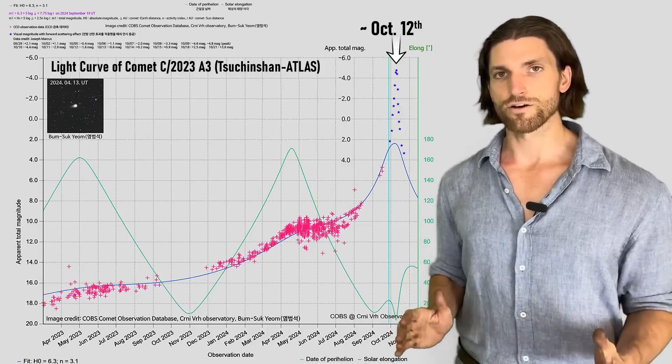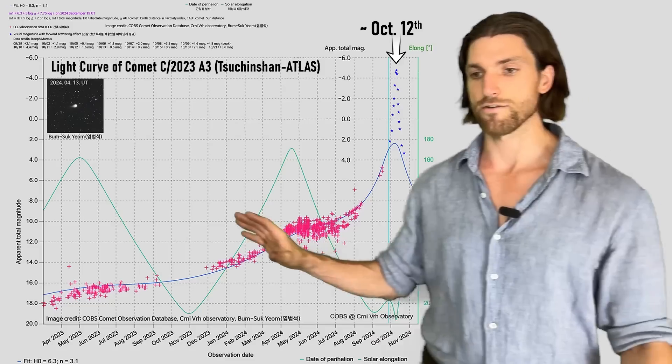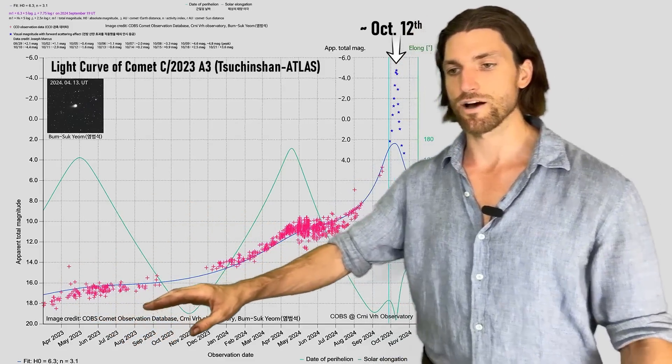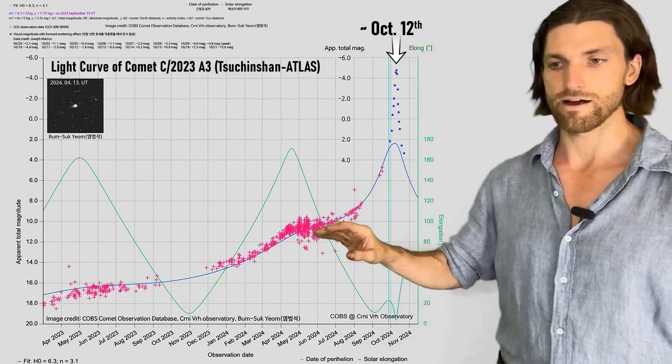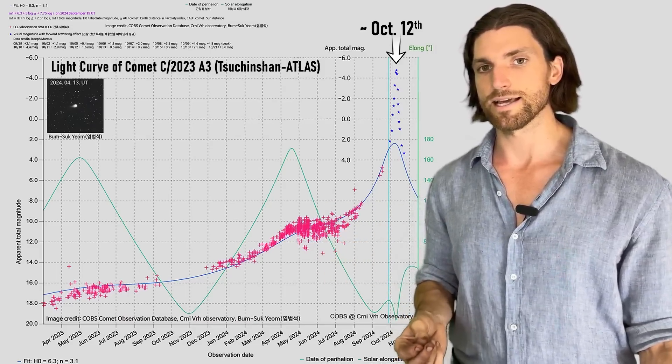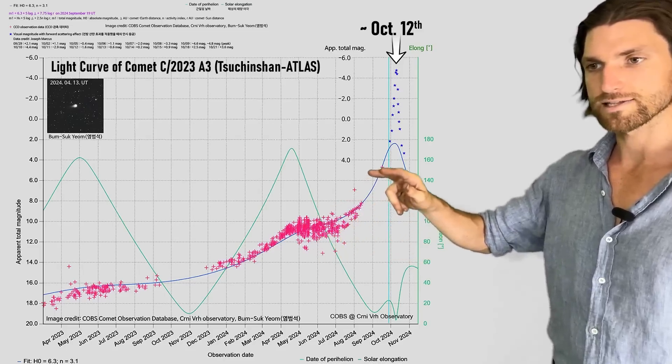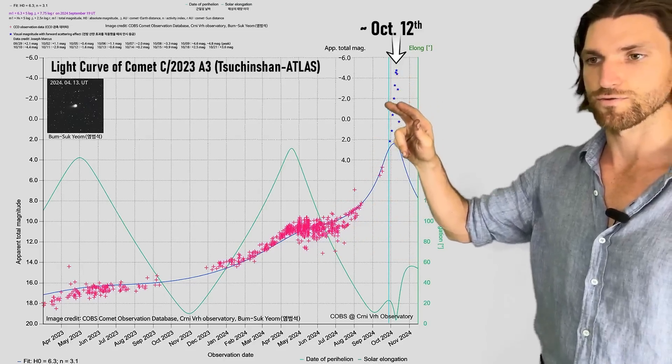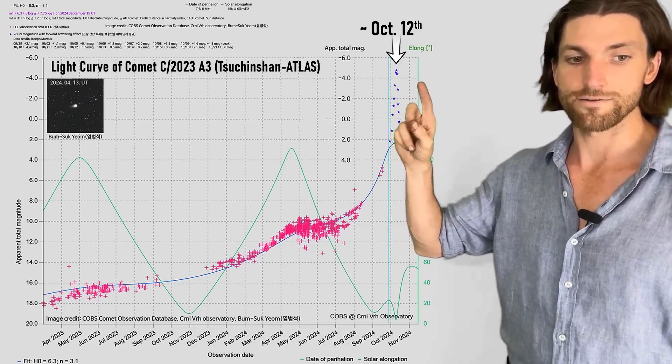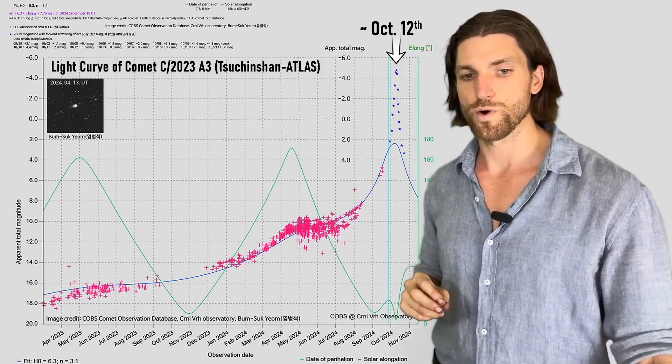Here we have the light curve of the Chuchinshan Atlas comet. And we see that back in 2023 when it was discovered, it had an apparent magnitude of positive 18 or so. Since then, it has gone up. It's stabilized here at about positive 11 in its apparent magnitude, still too dim to see with the naked eye. And then we see based off of its orbit, its light curve and its expectations for the apparent magnitude, and so this shows it going all the way to about negative four, even negative five apparent magnitude around October 12th, anywhere in that zone.